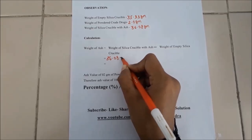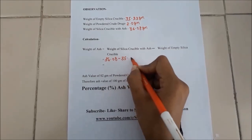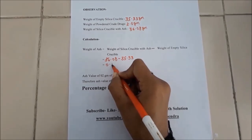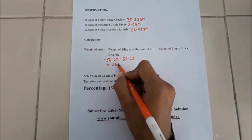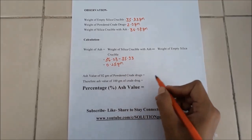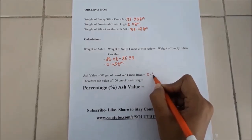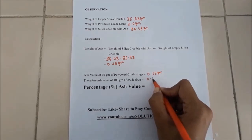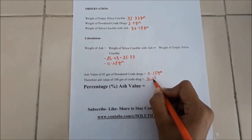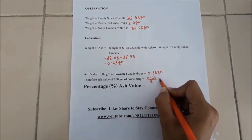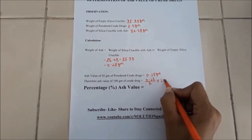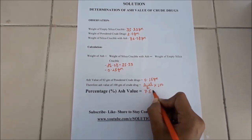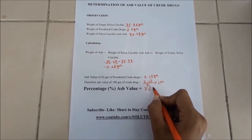Now we will calculate the ash value. The weight of the ash equals the weight of the silica crucible with ash minus the weight of the empty silica crucible. The weight of ash obtained is 0.15 grams. The ash value of 2 grams of powdered drug is 0.15 grams. Therefore, for 100 grams of crude drug: 0.15 divided by 2, multiplied by 100, equals 7.5 percent.